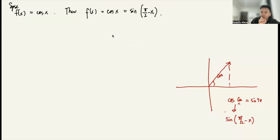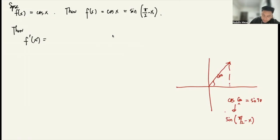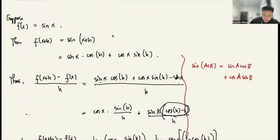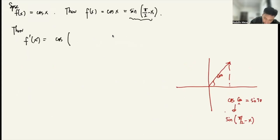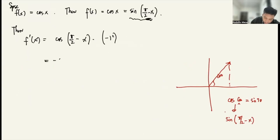We can use the chain rule. Taking the derivative of sine gives cosine, so this becomes cosine of (π/2 − x) times the derivative of the inside, which is −1. So we get negative cosine of (π/2 − x). And cosine of (π/2 − x) equals sine x, so this is negative sine x.